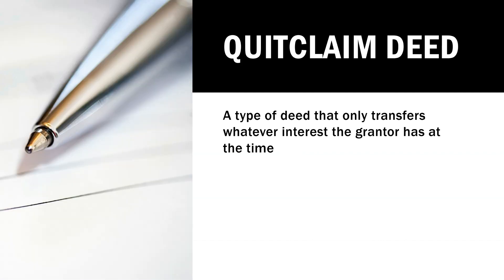Q for quit claim deed. A quit claim deed is a deed whereby the interests of the grantor or current owner are transferred over to the grantee who will become the new owner. Whatever interest the seller has is what the grantee is going to get. If the seller has nothing, the grantee gets nothing. In a quit claim deed, the grantor makes no promises of ownership. All they're saying is: whatever interest I have, I'm giving over to you. Quit claim deeds are used to cure a cloud in title — remember that for the exam.